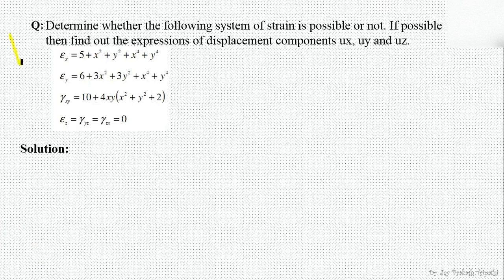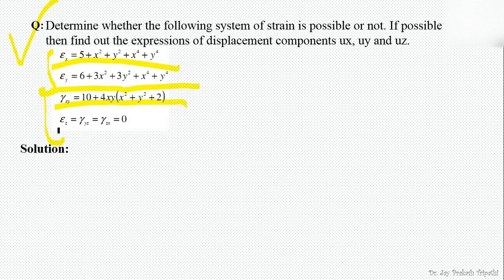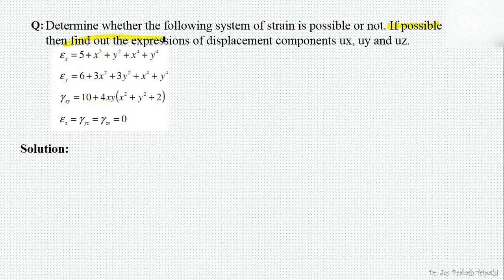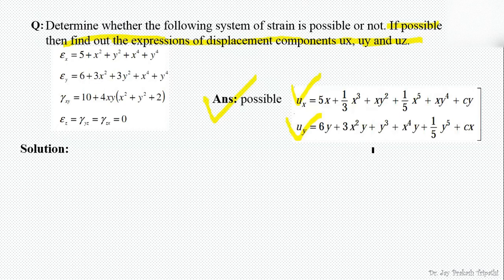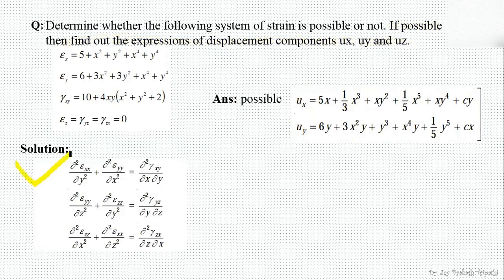Now let's solve a problem. It is given that the system of strain is a function of x and y. All z-components are zero, meaning it is a planar system of strain. We have to determine whether this system of strain is possible or not, and if it is possible, find the expressions of displacement components ux, uy, and uz.